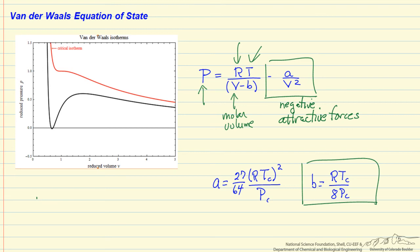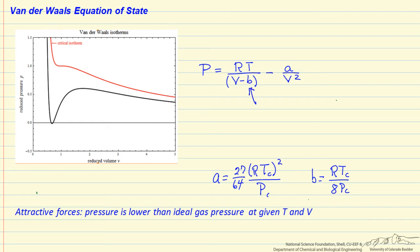The constant B here is accounting for the repulsive forces as molecules get closer together. So this term in the denominator then says that the pressure, because of repulsive forces, is going to be higher than what we calculate from the ideal gas equation of state.